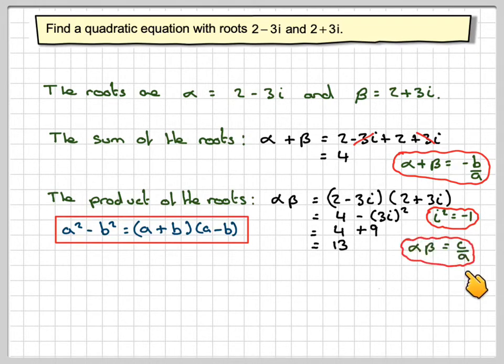And that is alpha beta is c over a. So obviously we're going to let a be 1. B would be minus 4. And c would be 13.